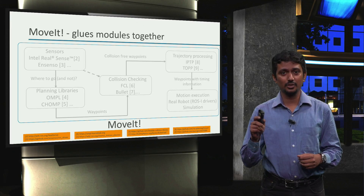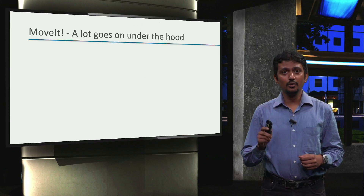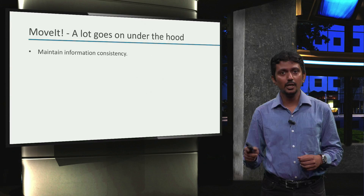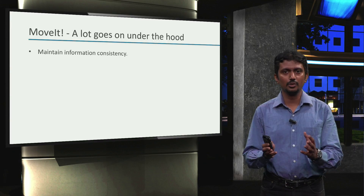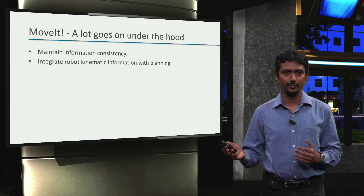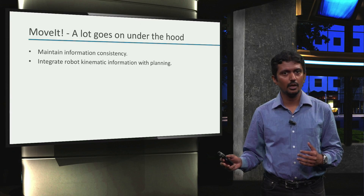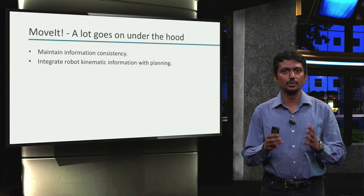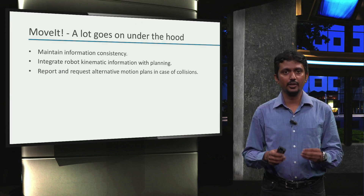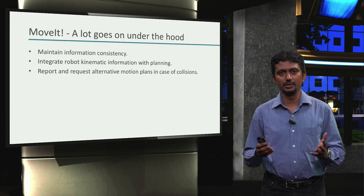It sounds simple when you just look at this overview, but as you might have guessed, there is a lot going on under the hood in MoveIt. MoveIt takes care of so many different things for us. First, it maintains information consistency between our ROS application and all those different functional modules such that they can work together. It integrates the kinematics of our robot setups to the motion planning libraries. Note that the planning algorithms are not only implemented to work with robot manipulators specifically — they are implemented in an abstract manner and MoveIt makes sure that those algorithms can work with robot arms.